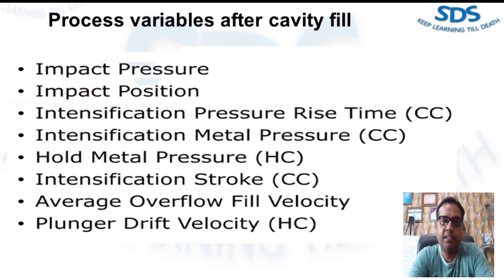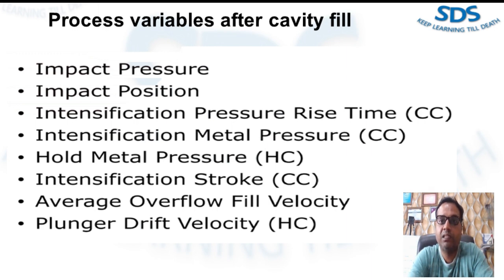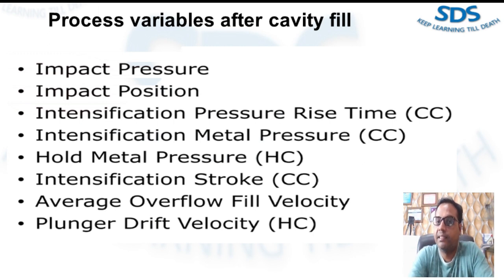Average overflow fill velocity is another variable after cavity fill. It can be either the plunger velocity during overflow fill or the overflow gate velocity during the overflow fill. This value is an important determinant of impact force. If the plunger velocity during overflow fill is close to the fill velocity, the impact force may be too high. If this value is between one-third and one-half of the plunger velocity during fill, the impact force should be minimized. If this value is below one-third of the plunger velocity during fill, the peak impact pressure may occur before the overflow fills, meaning the overflow may not be venting air and dirty metal well enough, and flashing problems may occur.